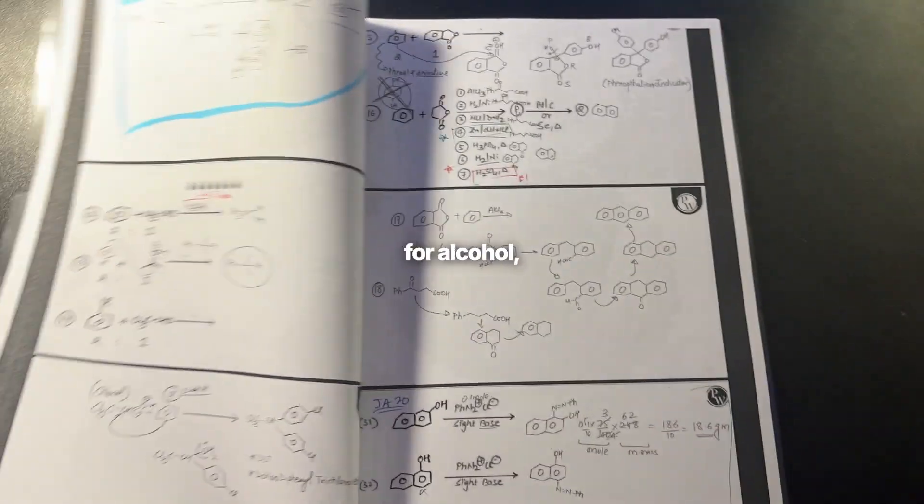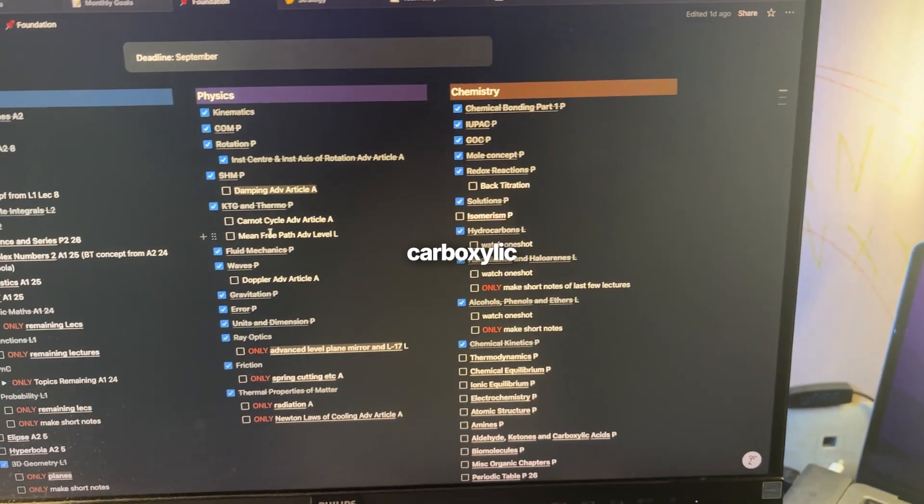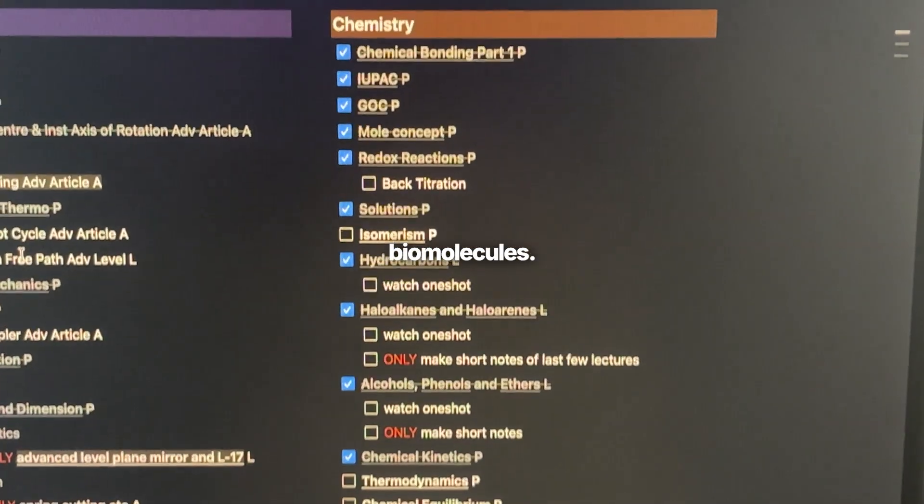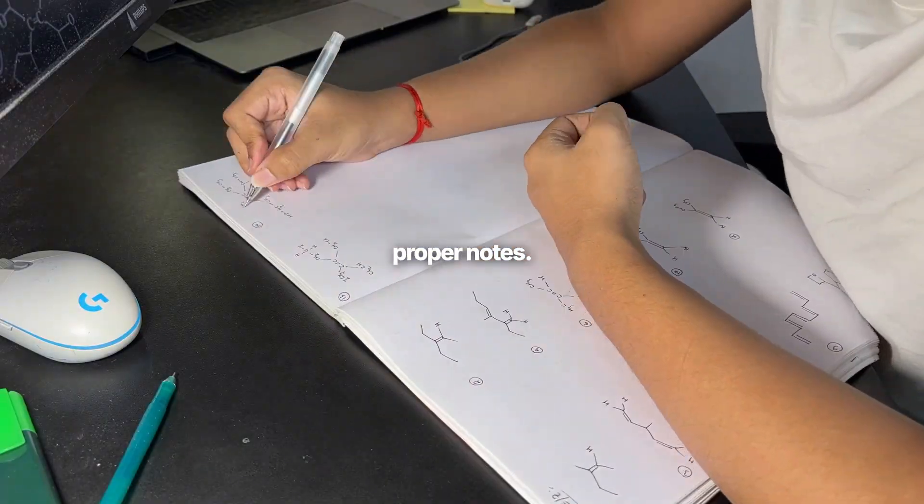I've printed notes for alcohol, phenols and ether from class 12th, but for the rest of the chapters that is aldehyde, ketones, carboxylic acids, amines and biomolecules, I'll be redoing them from Prayas 2025 since I did those chapters in a hurry without making proper notes.